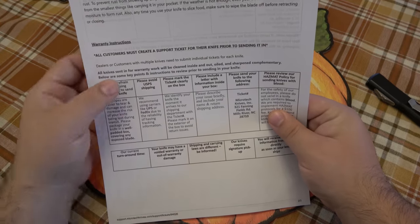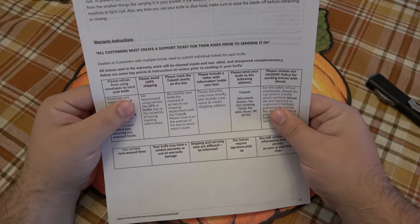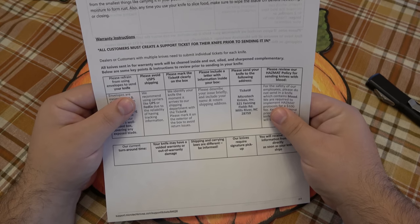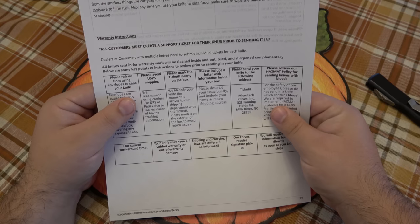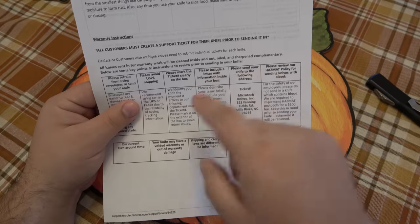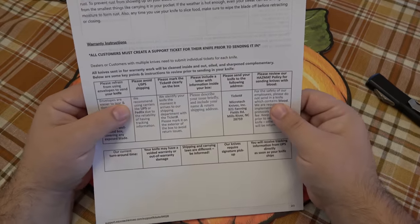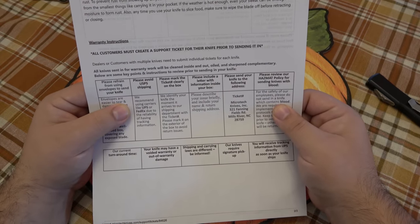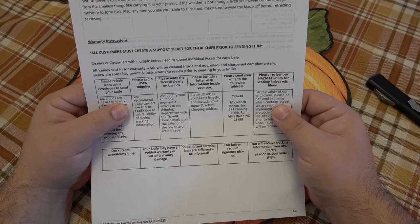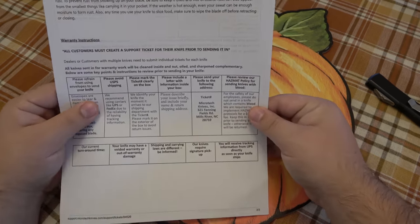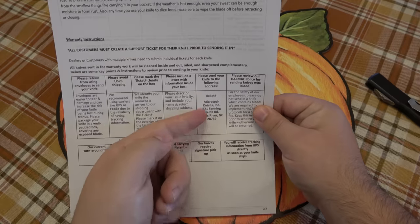So, next, it says, please mark the ticket number clearly on the box. We identify your knife the moment it arrives to our shipping department with the ticket number. Please mark it on the exterior of the box to avoid return issues. Very important key. Next, it says, please include a letter with the information inside your box. Please describe your issue briefly and include your name and return shipping address. Also very important.